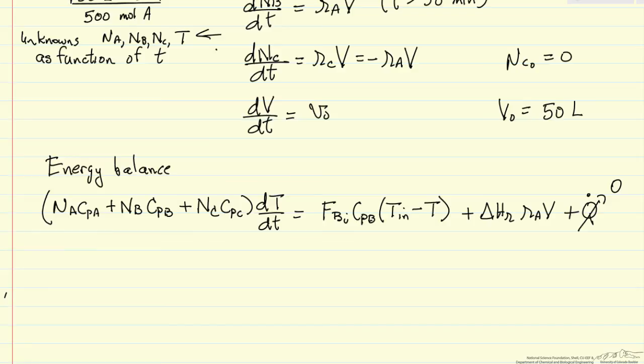We can look at the signs to make sure we've written this correctly. Heat of reaction, exothermic reaction, is negative. R sub A, A is reacting away, is a negative term, so overall this is a positive term, which means it's going to increase the temperature, increase the derivative on the left side.